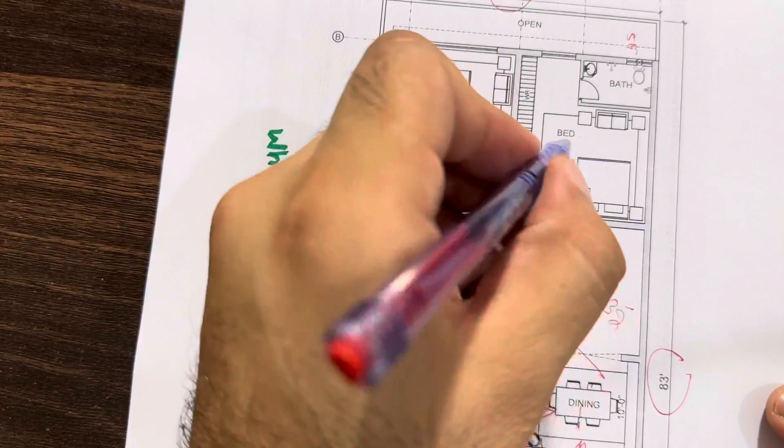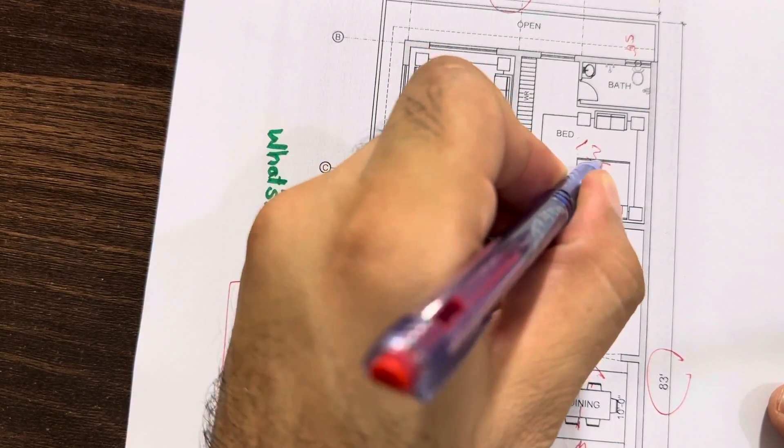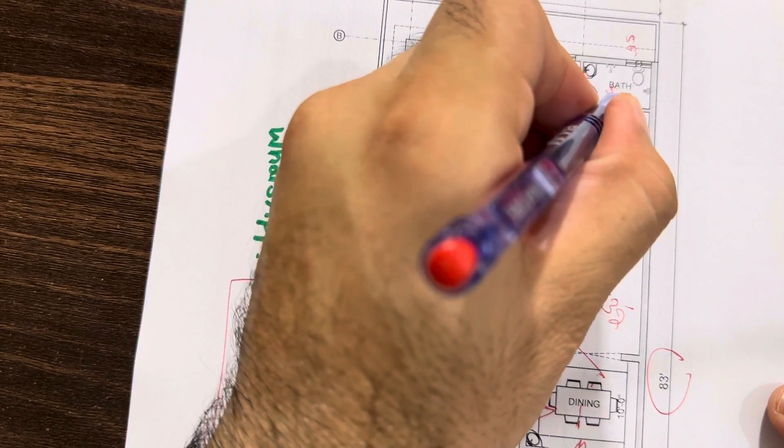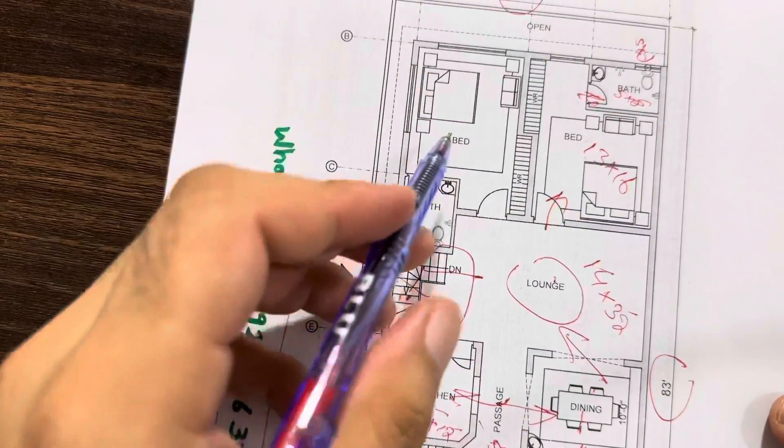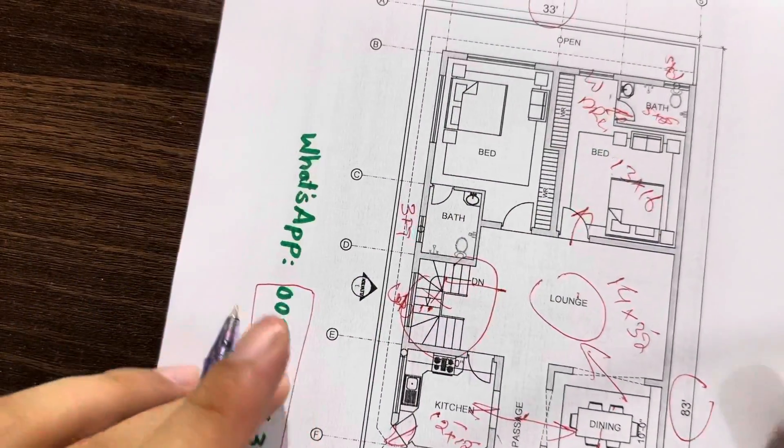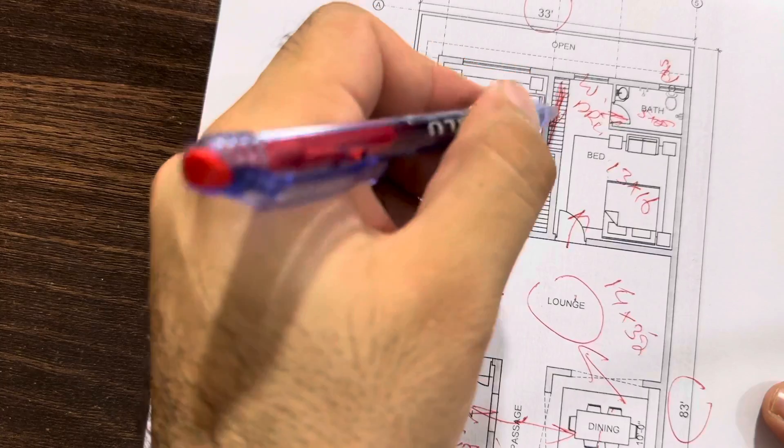Next, this is the first bedroom. Size is 13 feet by 16 feet. And this is its bath. Size is 5 by 8 feet. This is its ventilation. This is the window. As a dressing room, also, you can use this place. This is wardrobe.